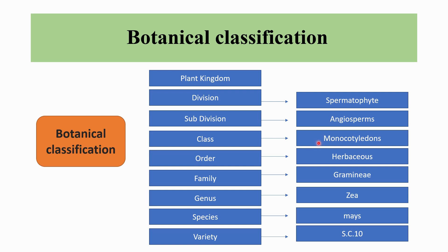For example, in Monocotyledons, the maize crop belongs to the herbaceous family Gramaceae, genus Zea, species maize. The variety is Sweet 10. This is the way how botanical classification has been divided for specific plant parts and flower structure.